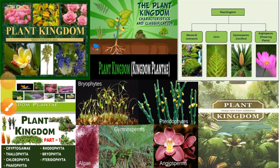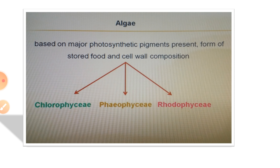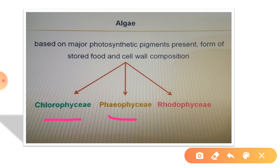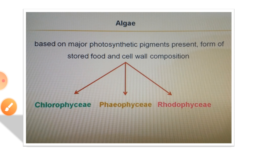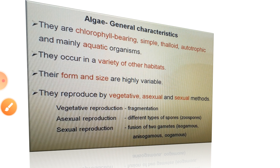Hello dear ones, continuing with chapter 3, that is plant kingdom. So we have learnt Chlorophyceae, Phaeophyceae and Rhodophyceae of the algal division. Now, let's have a look at the general characteristics of algae.